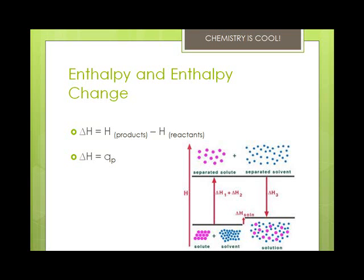The change in enthalpy for a reaction at a given temperature and pressure, called the enthalpy of reaction, is obtained by subtracting the enthalpy of the reactants from the enthalpy of the products, denoted as delta H. The change in enthalpy, delta H, is equal to the heat of reaction at constant pressure. This represents the entire change in internal energy, or delta U, minus any expansion or work done by the system.